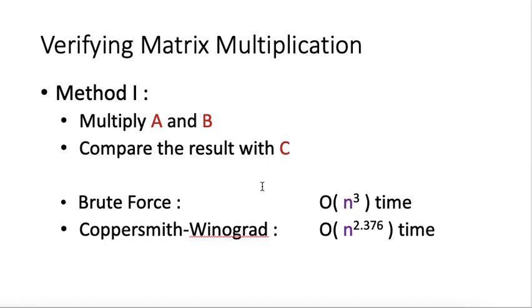Once we have the result of A and B, then we have n-square entries, and we compare each entry with that of C one by one. This takes n-square time only to check whether they are the same. So n-cubed plus n-square is n-cubed time.